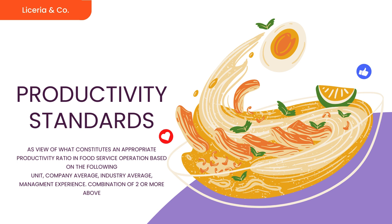Productivity standards represent a manager's view of what constitutes an appropriate productivity ratio in food service operations. These are based on: the unit of measure, the company average, the industry average, management experience, and a combination of two or more of the above. It is important to have a thorough background check on productivity standards, looking into industry and management experience averages to align with company standards.